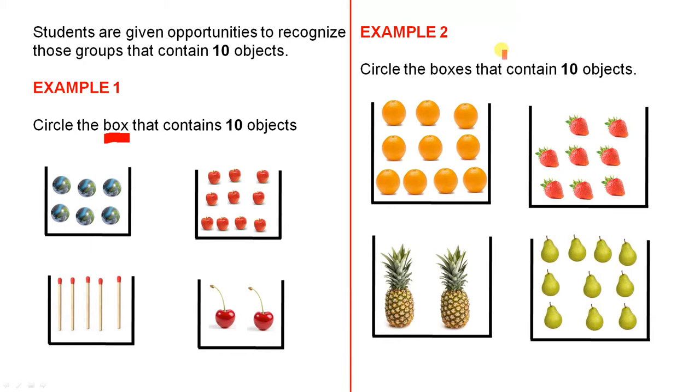For the second example, they would be asked to circle the boxes that contain 10 objects. When they hear the word boxes, they have to look very carefully because it's more than one box, and I'm sure they will circle this one and this one.